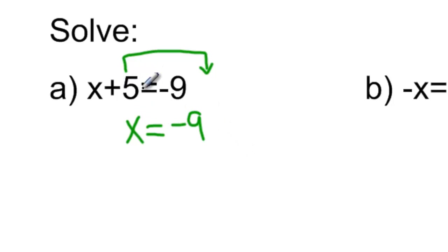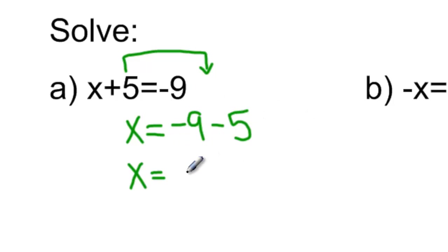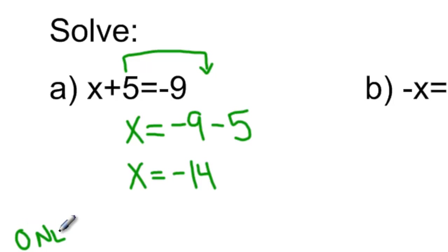So if it's positive 5 on the left, it would be negative 5 on the right. And once we've moved it to the other side of the equal sign, we can just simplify what's on the right-hand side: negative 9 take away 5 would be negative 14. This is a one-step equation.